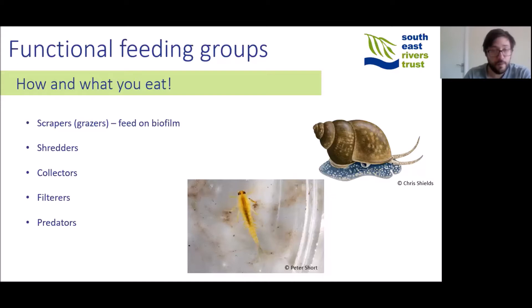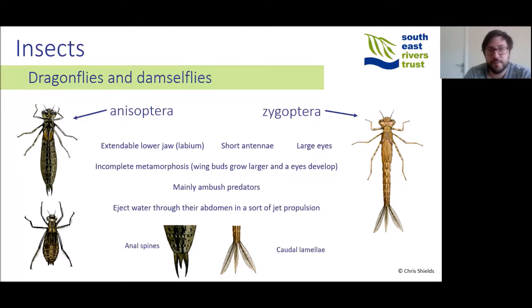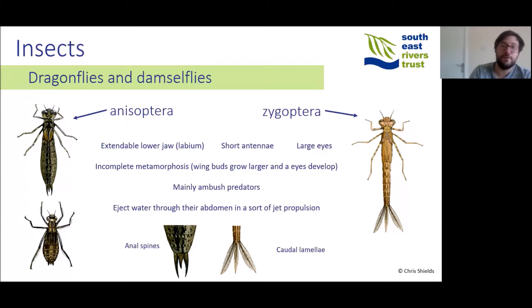Starting with insects: dragonflies and damselflies are two related groups known as Anisoptera and Zygoptera respectively. They all have an extendable lower jaw known as a labium used to catch prey, generally short antennae, and quite large eyes. They go through incomplete metamorphosis — as the nymph develops, it has two wing buds that grow larger. They are mainly ambush predators and you'll sometimes see dragonfly nymphs ejecting water through their abdomen in a form of jet propulsion. Dragonflies are generally broader with anal spines at the end of their abdomen, while damselflies are thinner and have three plate-like external gills known as caudal lamellae.